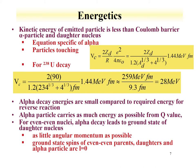So the alpha decays with energy on the order of 4 MeV, but to reverse the reaction would take 28 MeV. The alpha decay energies are small compared to the energy required for the reverse reaction.